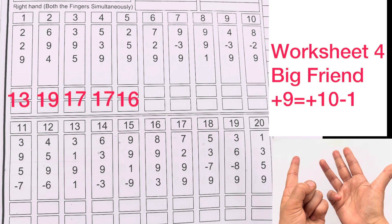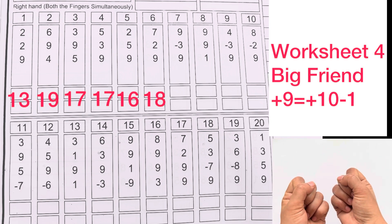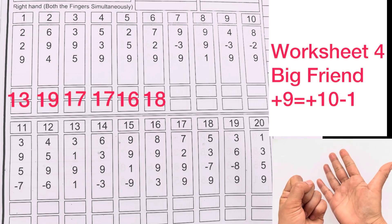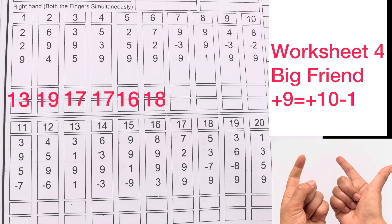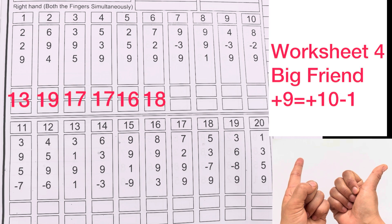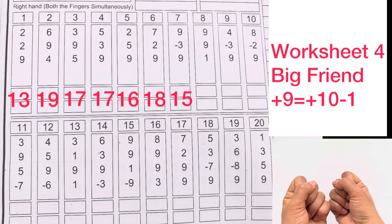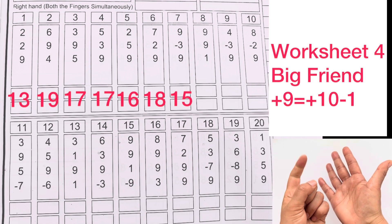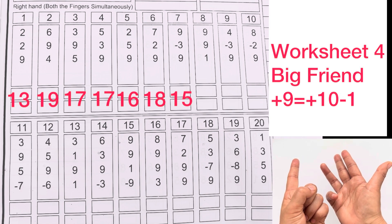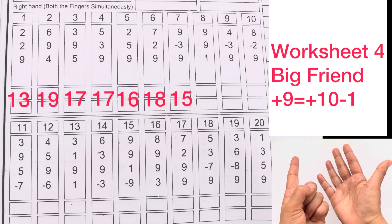Answer is 18. 9 minus 3 plus 9, plus 10 minus 1. Answer is 15. 9 plus 9, plus 10 minus 1, plus 1. Answer is 19.